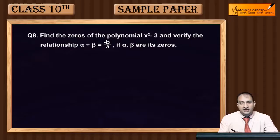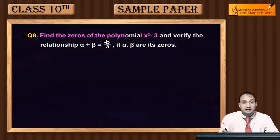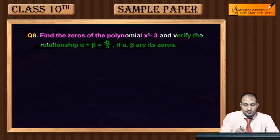Question: Find the zeros of the polynomial x² - 3 and verify the relationship α + β = -b/a, where α and β are the zeros.